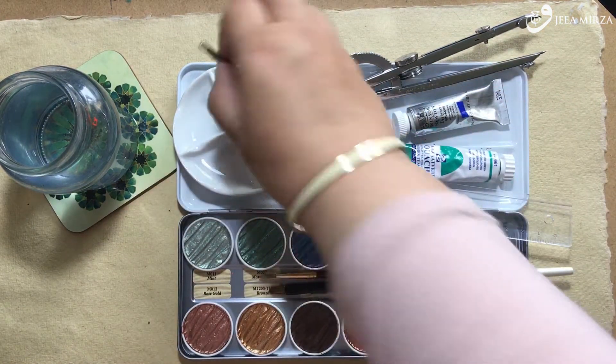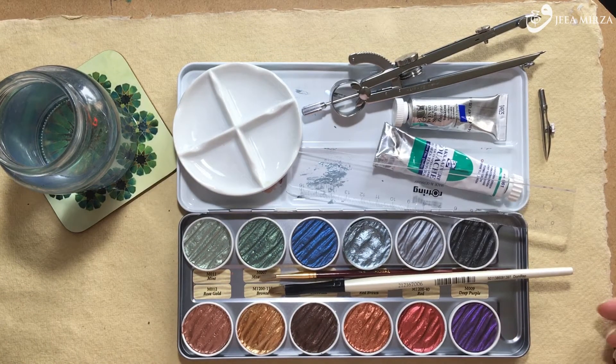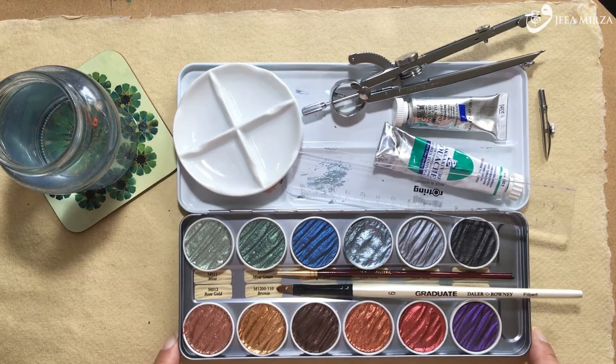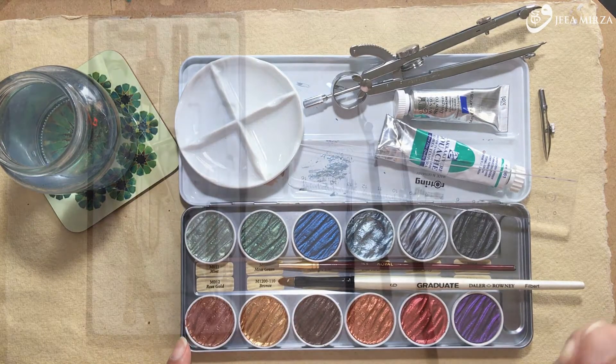I've also got my compasses and a ruling pen or steel pen attachment so that I can ink in circles using my compass. I'll have a straight edge with an inking edge and the usual supplies, brushes, clean water and some scrap paper.